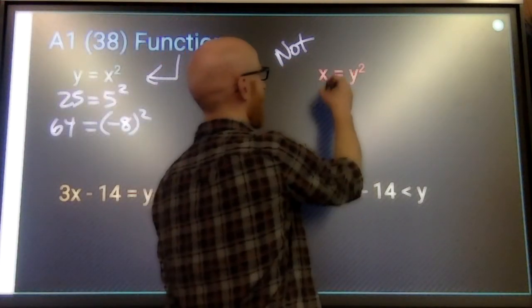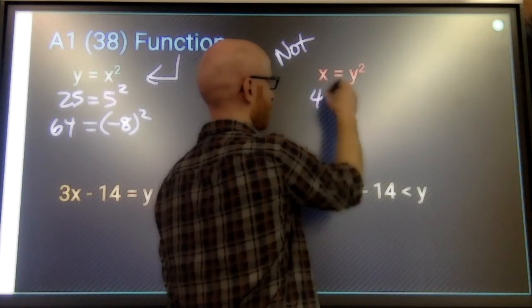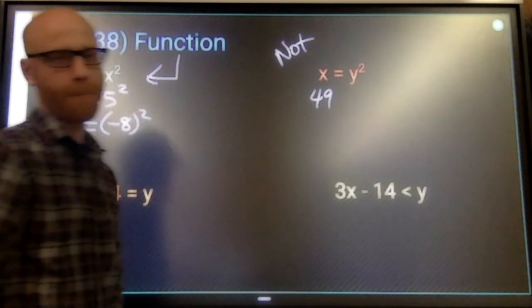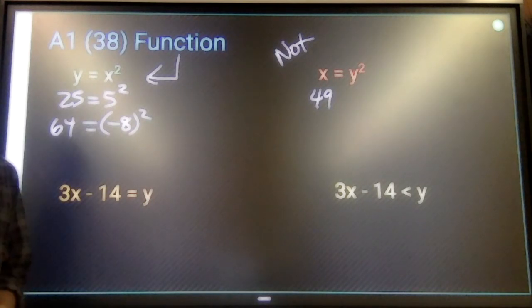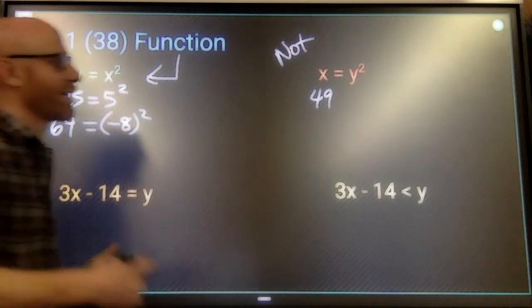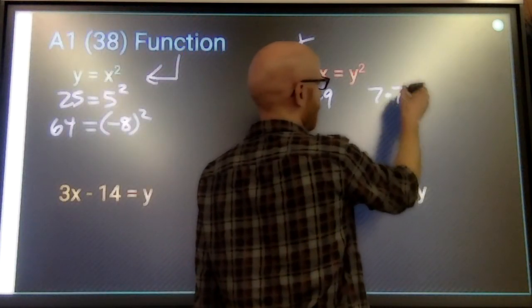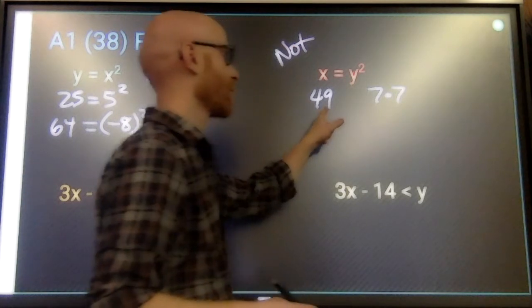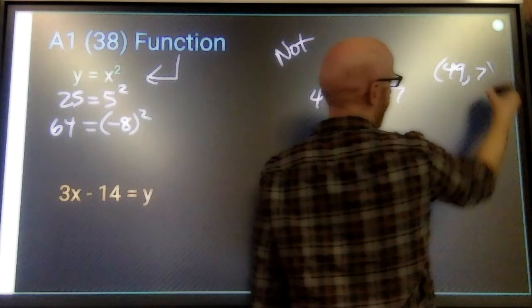Here, let's say I say x is 49. What is y? What number times itself equals 49? Now, the first number that you think of is 7. 7 times 7 is 49. So when x is 49, y is 7.